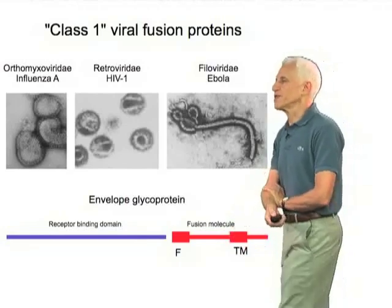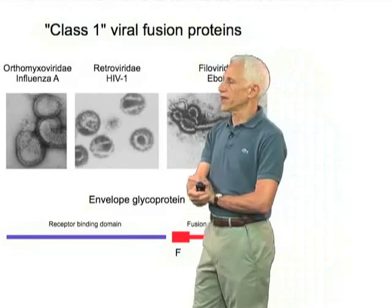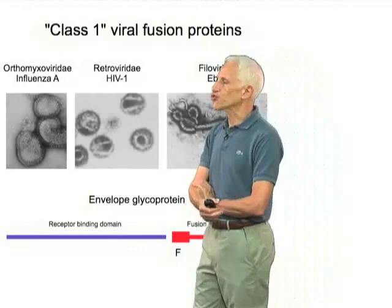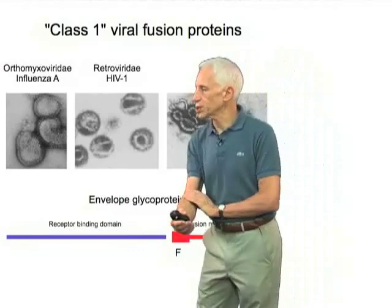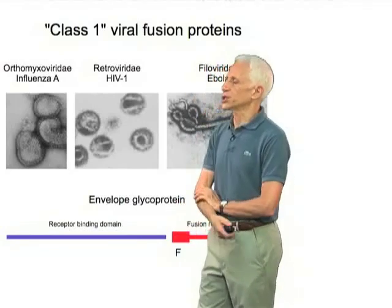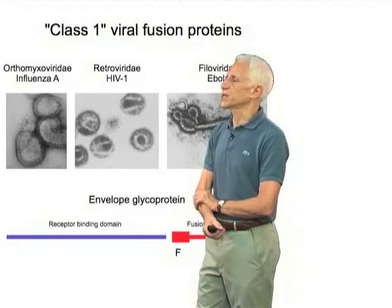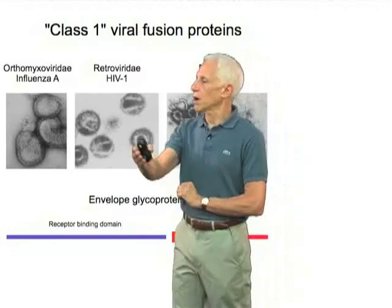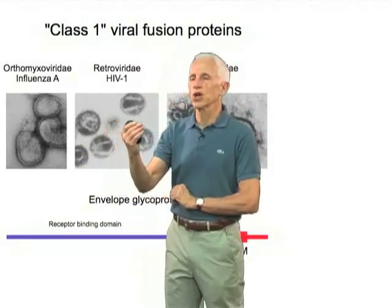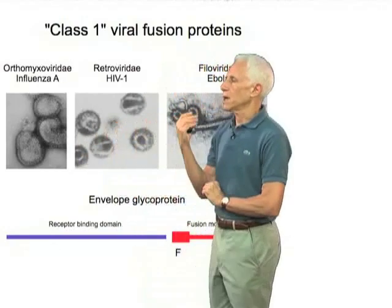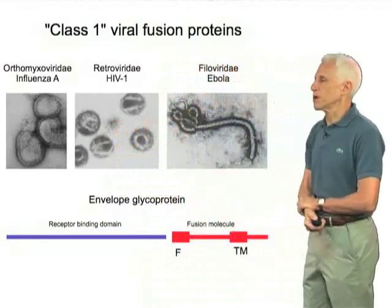Examples of this sort of protein — they are all trimeric assemblies of this sort of organization — are influenza, HIV, and the filoviruses such as Ebola.